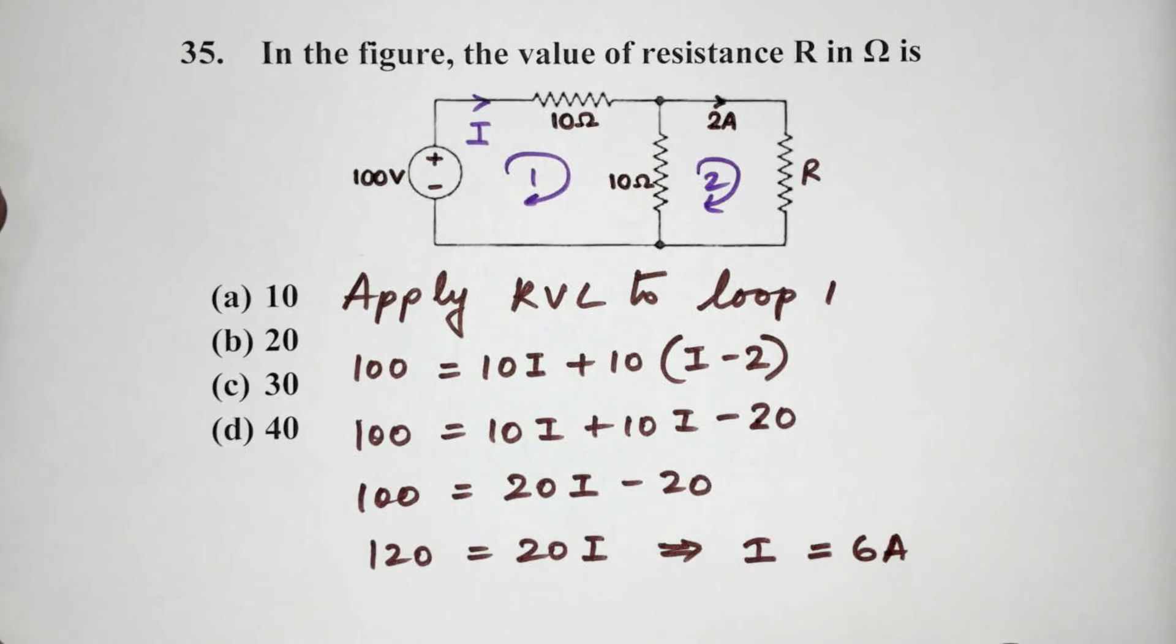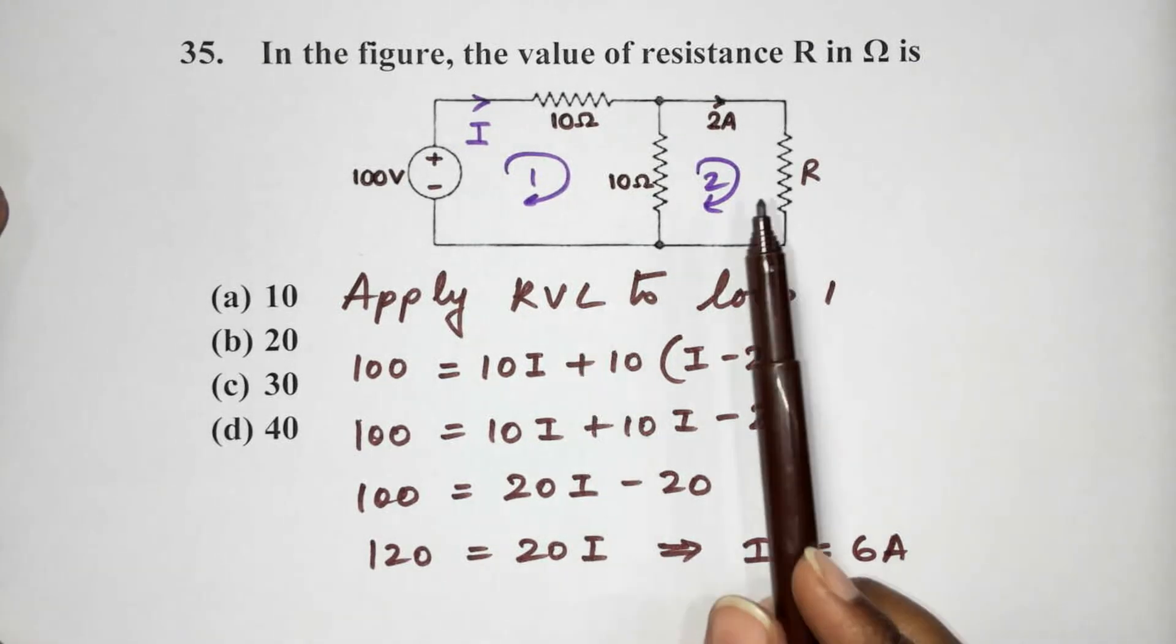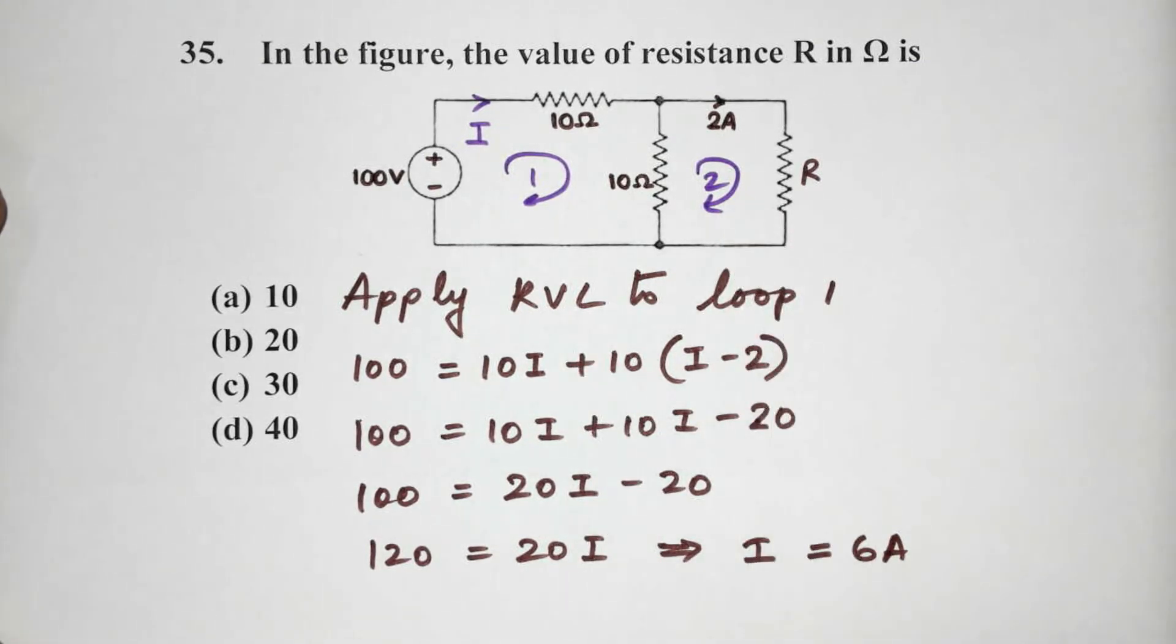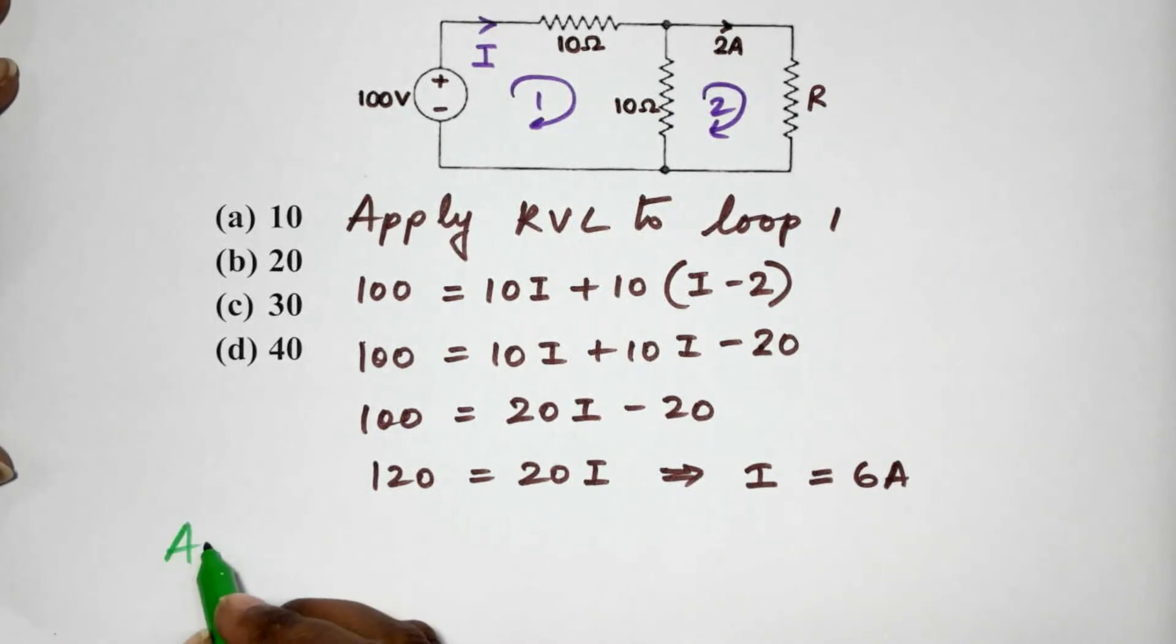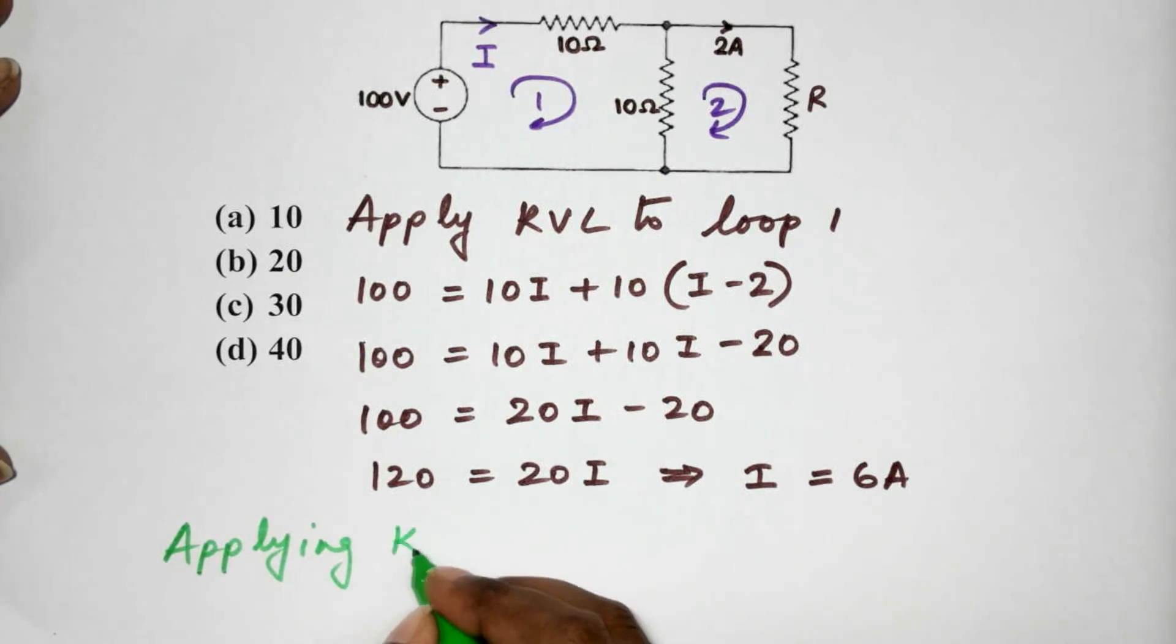Now, we will apply KVL to the next loop. Alright, now applying KVL to loop 2.